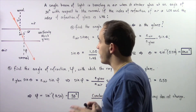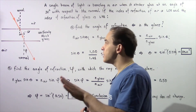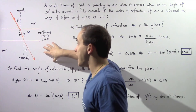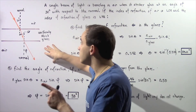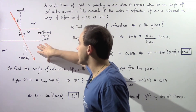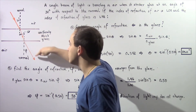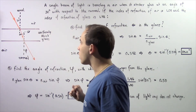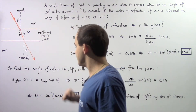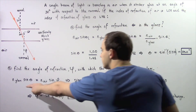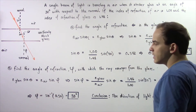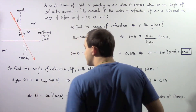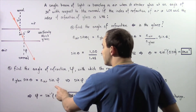Now we're looking at the situation where our beam of light traveling within the glass is leaving the glass and entering air. Because the speed of light within glass is less than the speed of light within air, the ray will refract and bend away from the normal. The angle phi will be greater than the angle theta. Applying Snell's Law: n_glass multiplied by sine of theta equals n_air multiplied by sine of phi.